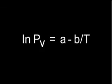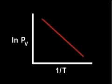When we take the log of both sides, we obtain this equation. It tells us that a graph of log vapor pressure versus the reciprocal of the absolute temperature will be a straight line.